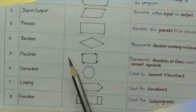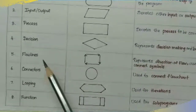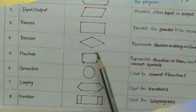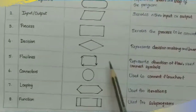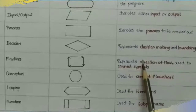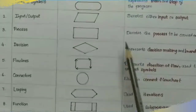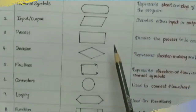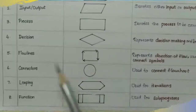Next are flow lines. If you look at the picture, these are arrow marks. We use arrow marks to show the direction of flow. This symbol is connected to the flow lines.